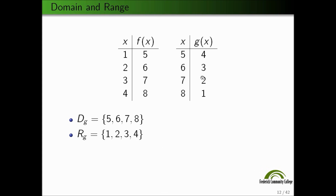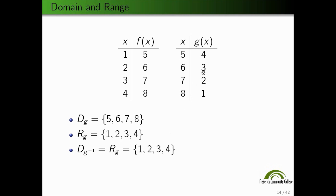If you wrote it as 4, 3, 2, 1 it would still be correct, but I like trying to keep an order of things. So the domain of g inverse — g inverse simply takes the range of g and maps it back to the inputs of g. So the domain of g inverse is the range of g, which simply equals 1, 2, 3, 4. And the range of g inverse is the domain of our original function g, so 5, 6, 7, 8.